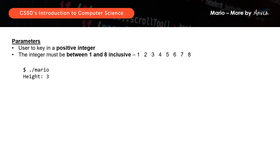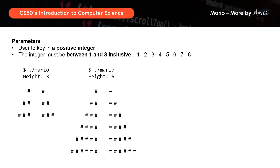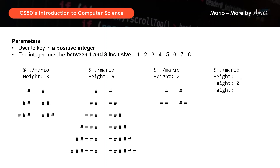If height equals to 3, this should print. If height equals to 6, this should print. And if height equals to 2, we'll get a smaller pyramid like this. What happens if we key in a number that is not between 1 and 8 inclusive? The system should reject the input and keep asking you to key in another height. As long as you key in something outside of the acceptable range — less than 1 or more than 8 — the system will keep asking. When you finally key in something within the accepted range, let's say 4, this pyramid will print.